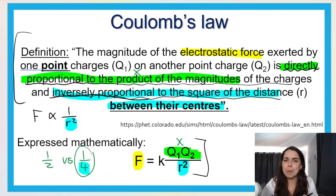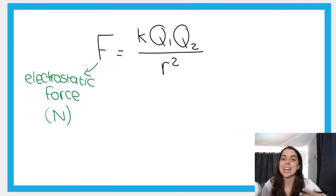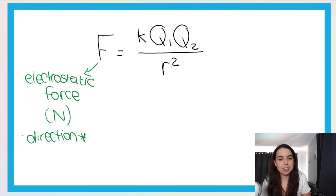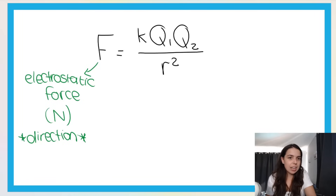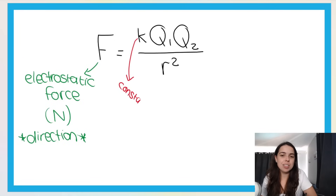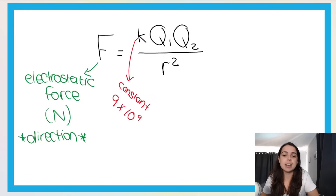Let's look at the different parts of the formula and their units. F is the electrostatic force, measured in newtons. Because it's a force, you need to give a direction — unless they say magnitude, in which case no direction is needed. K is Coulomb's constant, a physical constant that will always be 9 times 10 to the power of 9. It will always be given on your formula sheet.